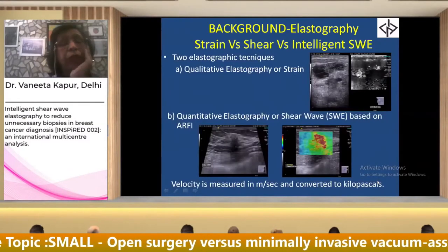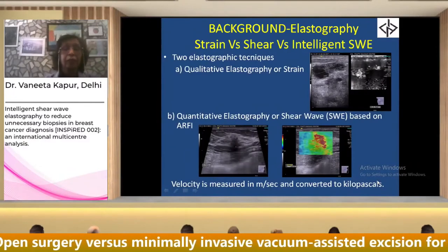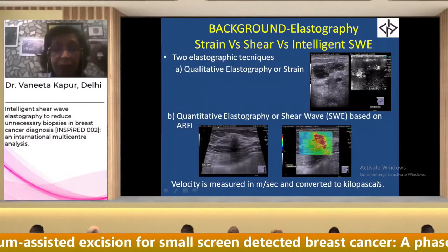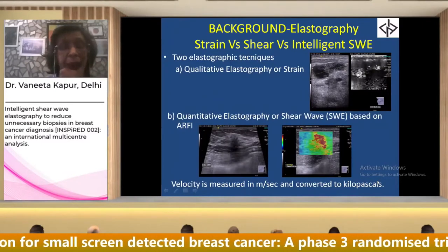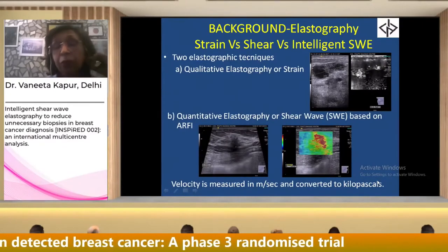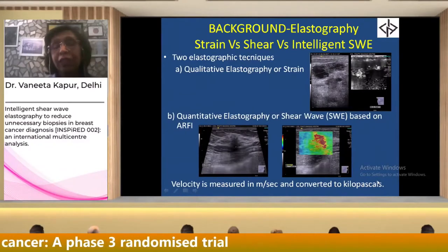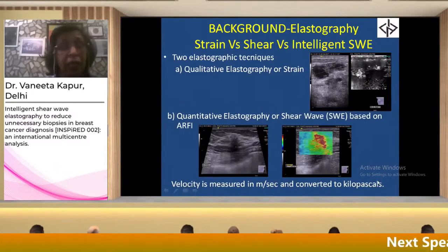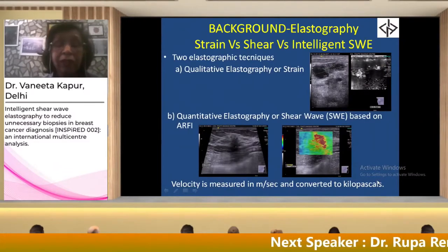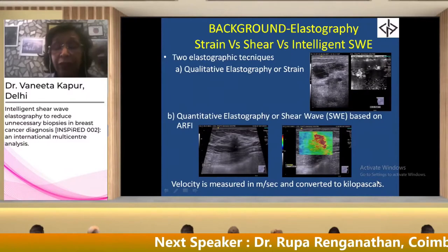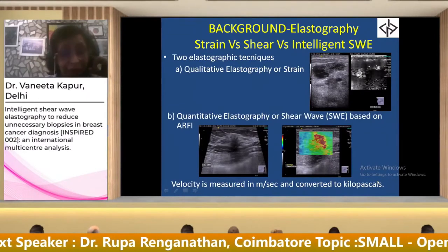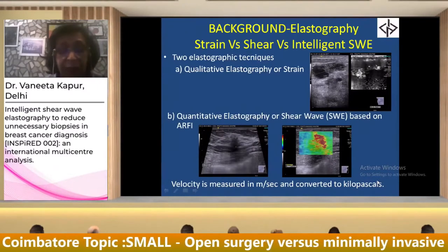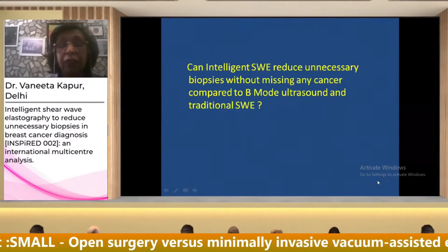Elastography has two varieties: strain and shear wave elastography. Images from our own work show areas that are soft or non-suspicious as white on strain elastography. With quantitative or shear wave elastography, hard areas appear as red. The velocity is taken in meters per second and converted to kilopascals.